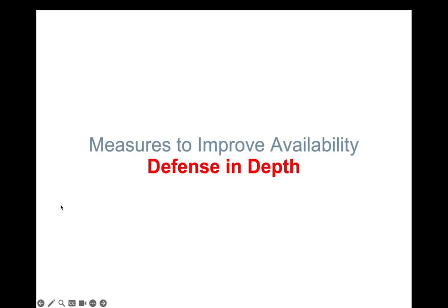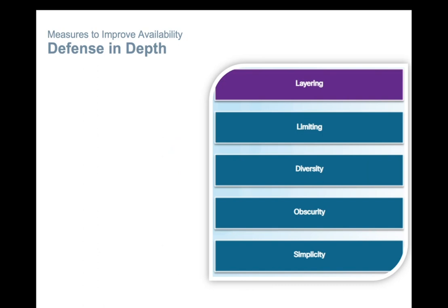Welcome back. In the 5.9 concept, we were talking about the measures to improve availability. The third major concept we'll discuss is defense in depth. Defense in depth will not provide an impenetrable cyber shield, but it will help an organization minimize the risk by keeping it one step ahead of cyber criminals.